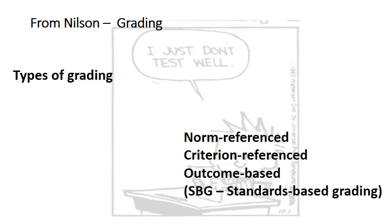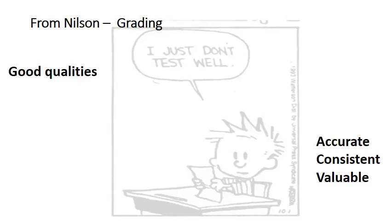Let's move on to types of grading. I've listed three: norm-referenced, which is based on curves; criterion-referenced, which is based on things like rubrics; and then outcomes-based or standards-based grading. This last one is an interesting technique where you develop specific standards or outcomes you want students to reach, provide them opportunities to reach proficiency, and once they reach proficiency you provide a grade. I've used some of this and found it very hard, but you can find research on it across most disciplines — it's an interesting way to look at student grading.